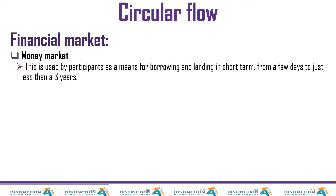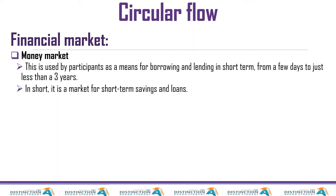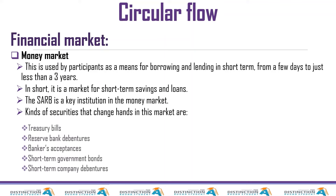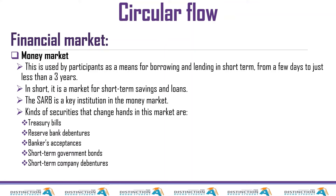The money market is used by participants as a means of borrowing and lending in the short term — from a few days to just less than three years. In short, it is a market for short-term savings and loans. The SARB is a key institution in this market. Kinds of securities that change hands here include treasury bills, reserve bank debentures, and bankers' acceptances.